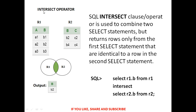Intersection operator: intersection is similar to natural join, and the common value is the output. Only B2 is common, so B2 is the output. The SQL query is: SELECT R1.B FROM R1 INTERSECT SELECT R2.B FROM R2. The SQL INTERSECT operator is used to combine two SELECT statements but returns rows only from the first SELECT statement that are identical to a row in the second SELECT statement.